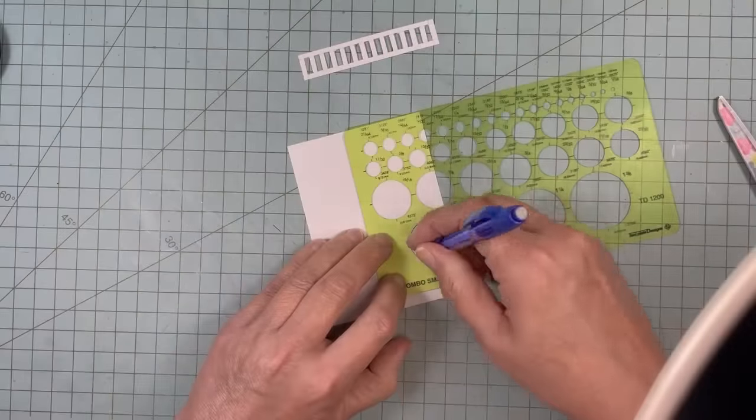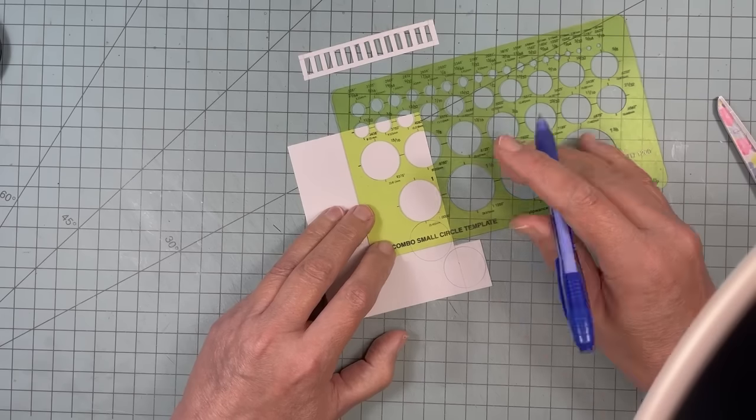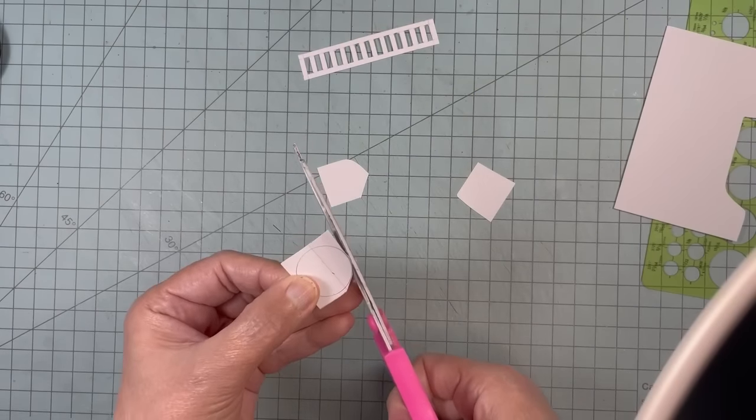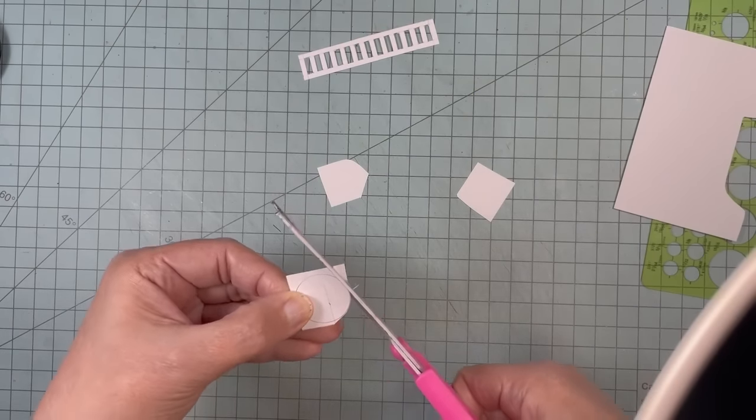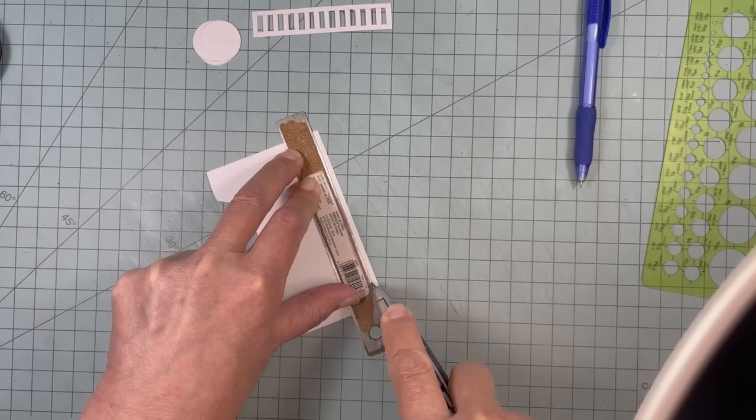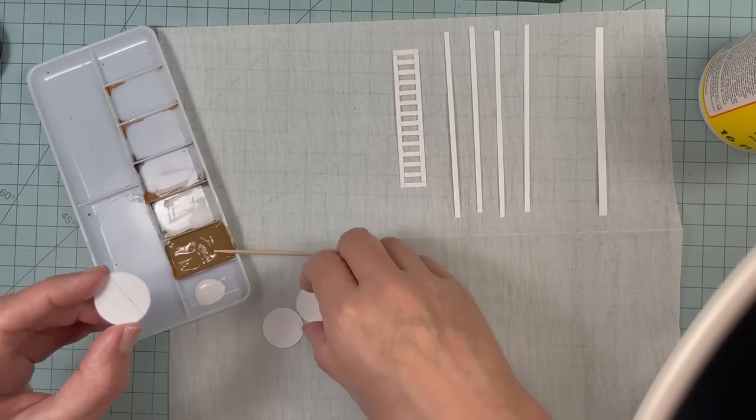Cut four one-inch circles out of cardstock. Cut three one-eighth by four-inch strips and one one-quarter by four-inch strip out of the cardstock. Glue the circles together.